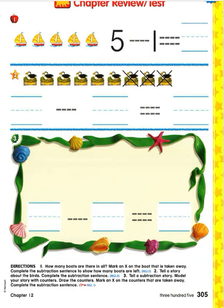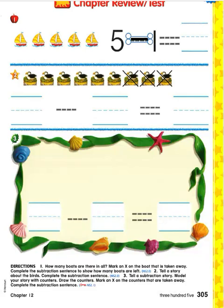Let's start on number one. I see there are five sailboats. I see the subtraction sentence five take away one. Would you trace over the subtraction sign and the equal sign? Five take away one is how many left over. To solve this, we need to cross off one to take it away and count to see how many are left. How many sailboats do you see left after we take the one away?